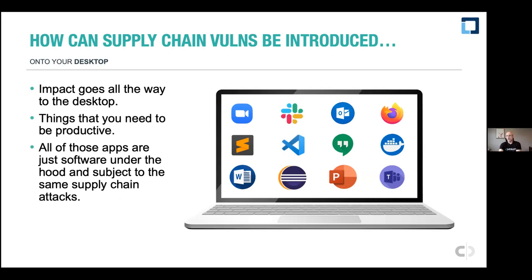All of the software we talked about — server software, developed software — a lot goes to web apps but some definitely goes to the desktop. All software you install on your desktop has dependencies, and many use public dependencies because no one wants to rebuild everything themselves. Reusing code is an important part of the open source lifecycle, but it opens up the possibility for these attacks. At the end of the day, all these desktop apps have a large sprawl of dependencies.